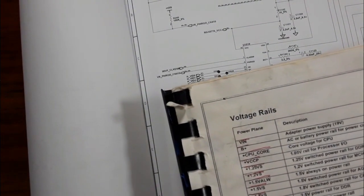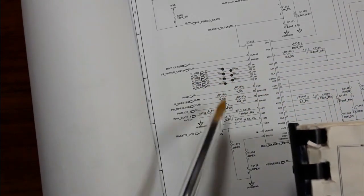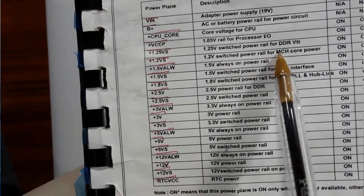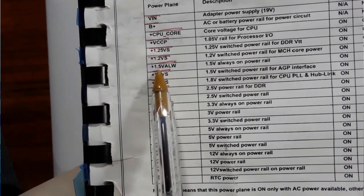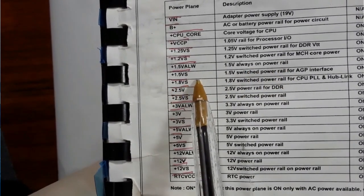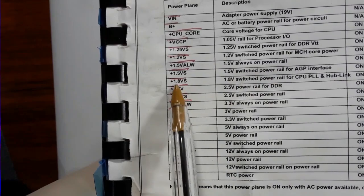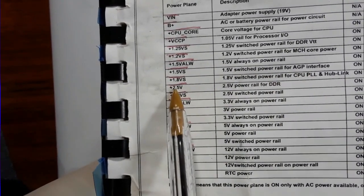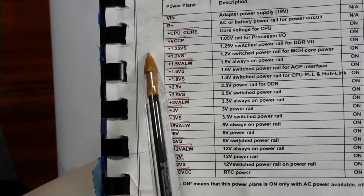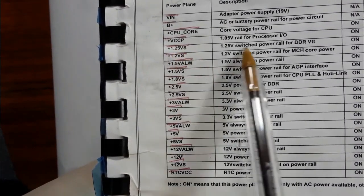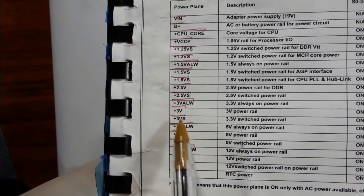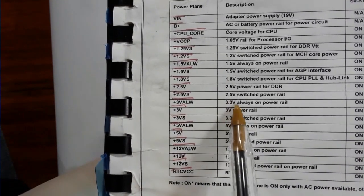This is another schematic for a different motherboard, not this one. 1.2V is for the GMCH. 1.5V always-on power rail, 1.5V for AGP, 1.8V for the CPU, 2.5V for the RAM — this is the main power. Half of this is 1.25V for VTT, as you can see, which is the VTT voltage for RAM terminals.